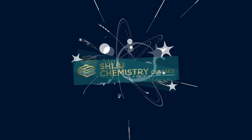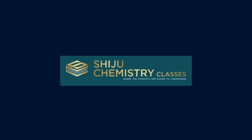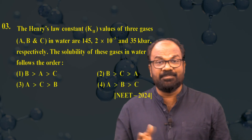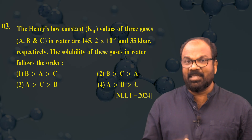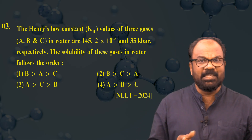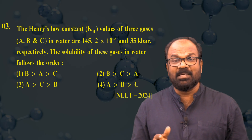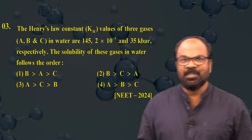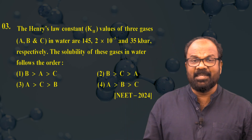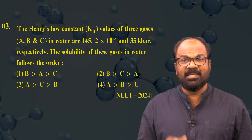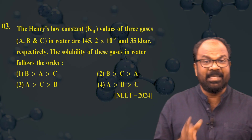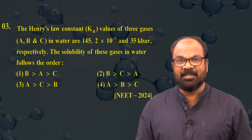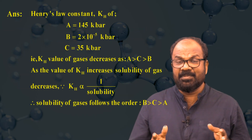Question number three: the Henry's Law constant (KH) values of three gases A, B, and C in water are 145, 2×10⁻⁵, and 35 kilobar respectively. The solubility of these gases in water follows the order — option (1) B > A > C, option (2) B > C > A, option (3) A > C > B, option (4) A > B > C.